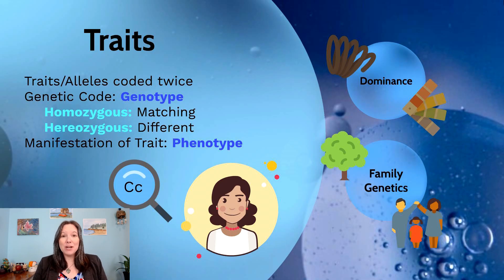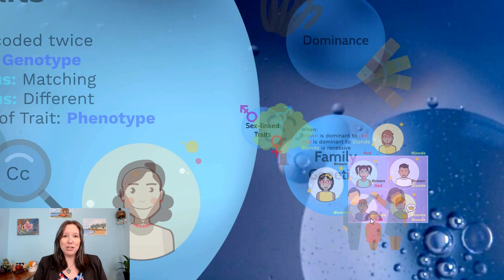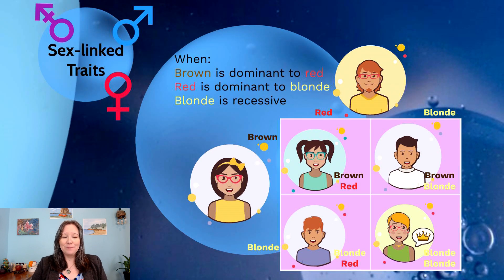Now that we talked about dominance and recessive alleles, we're going to talk about how we can track these alleles through different generations, through what we're going to call family genetics.